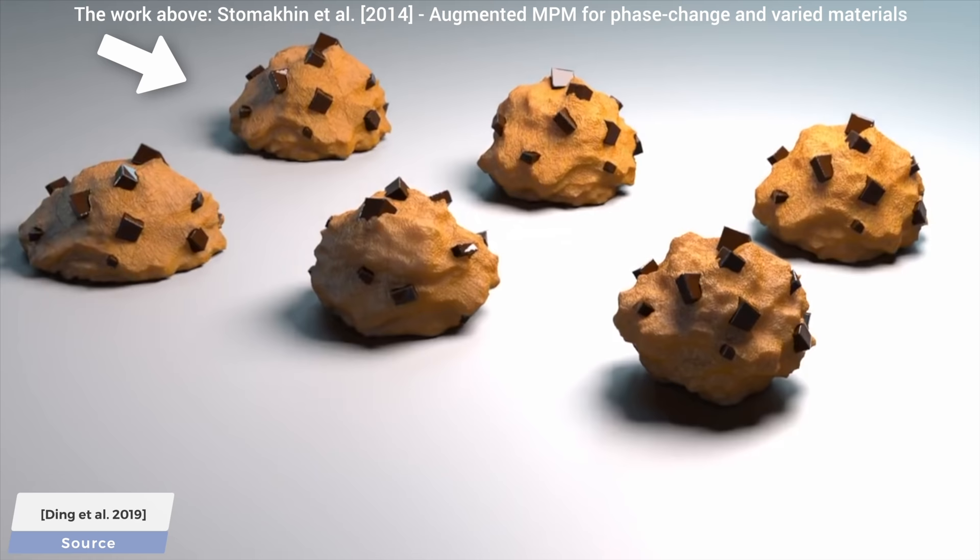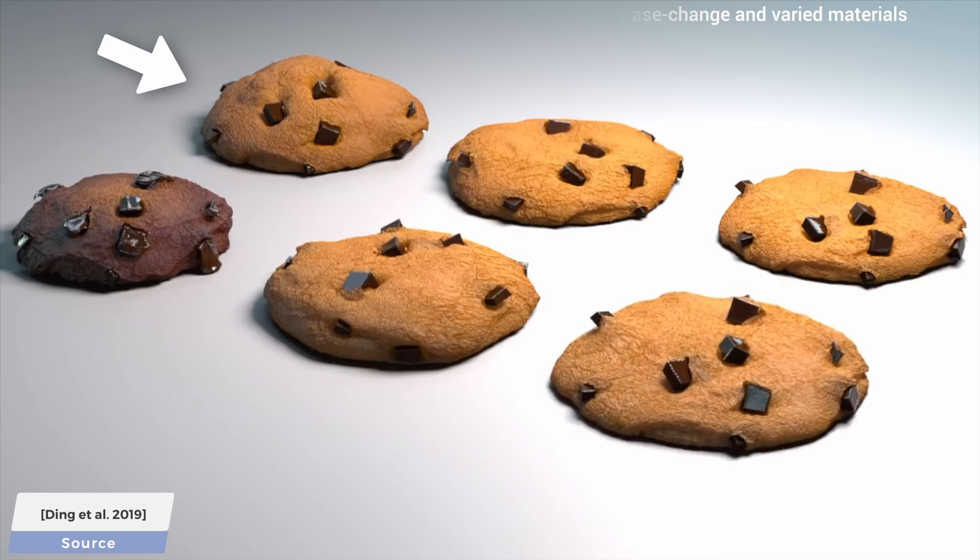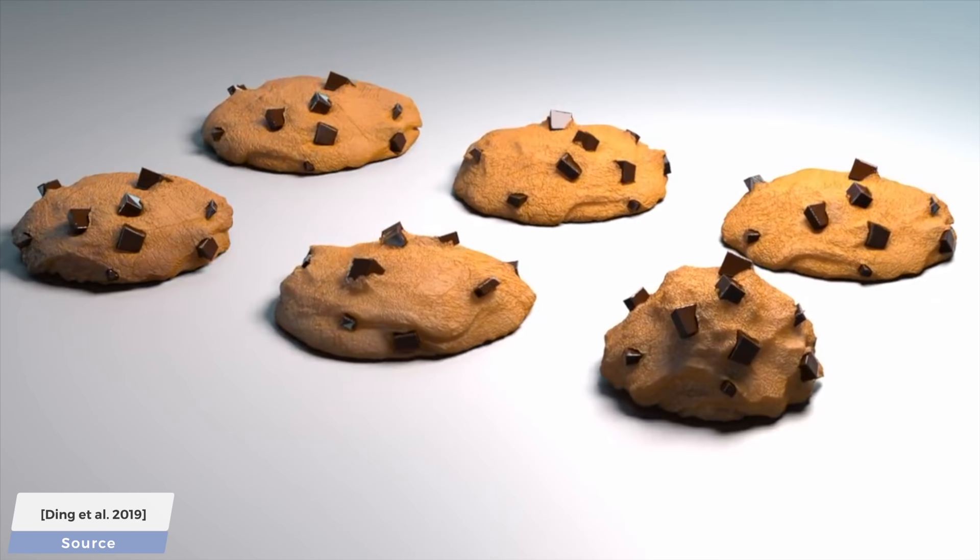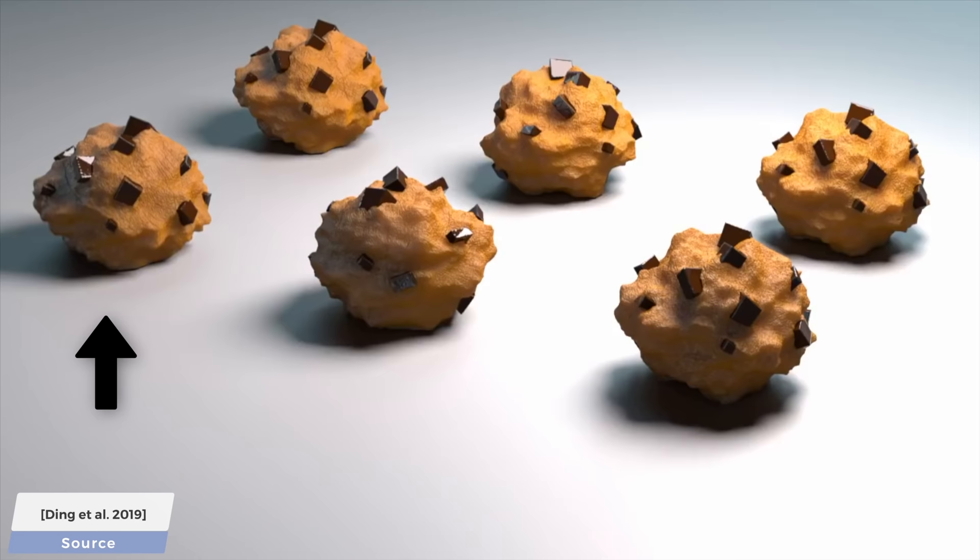The ones in the bottom row are made with a new technique. You can see a different kind of shape change as we increase the temperature if we crank the oven up even more, and look there! Even the chocolate chips are melting! Oh my goodness! What a paper!